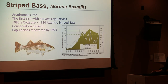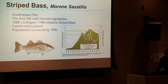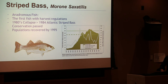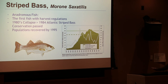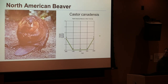The striped bass is very common in the New York area with a long history of both commercial and recreational fishing. There was a collapse of the fish stock in the 1980s, which led to the Atlantic Striped Bass Conservation Act, and this has led to an increase in fish numbers — a successful conservation story. One mammalian species of note is the North American beaver, which appears on the Dutch seal and was one of the main reasons the Dutch first traveled to North America.